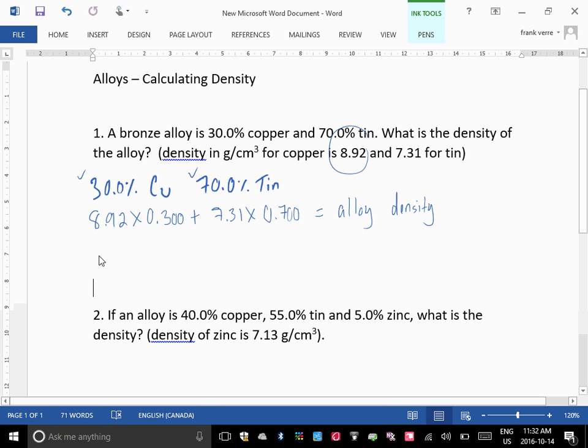So what was your answer, Alyssa? So 2.676, but it should be 2.68, because we want three digits. That's the density that basically 30% of copper would contribute to this alloy. Then we add the density that 70% of the tin represents, what would that be?